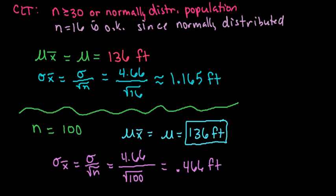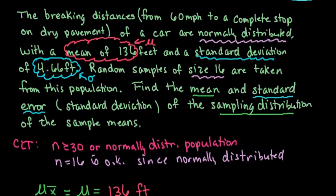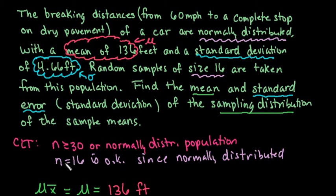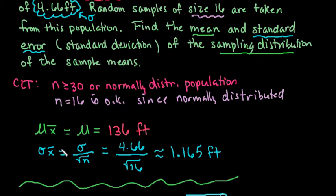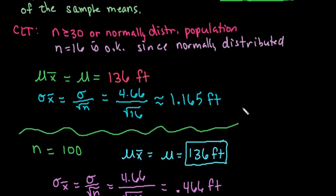Just a recap: in order for the central limit theorem to kick in, you either have to have a normally distributed population or a sample size greater than or equal to 30. If those conditions are met, the mean of the sampling distribution of the sample mean equals the mean of the population, and the standard error equals the population standard deviation divided by the square root of the sample size. Remember, as the sample size increases, your standard error will decrease. Thanks for watching — please check out my other videos.